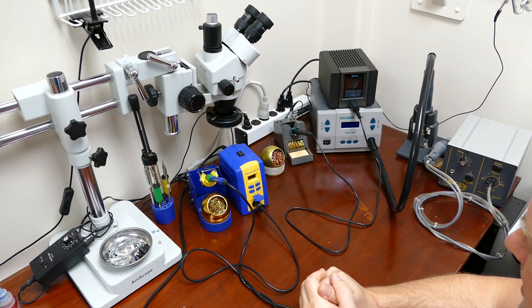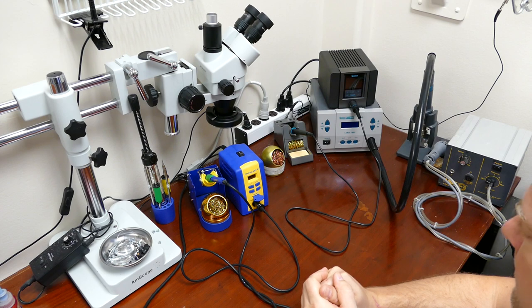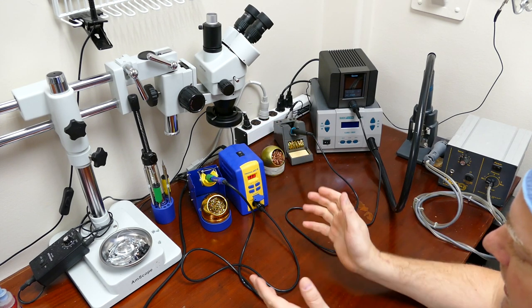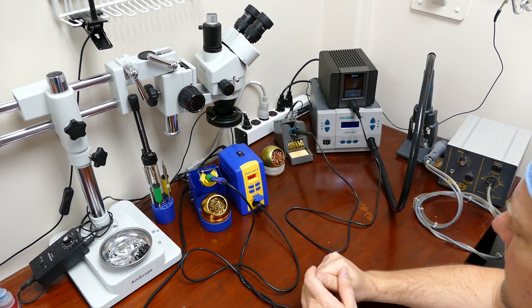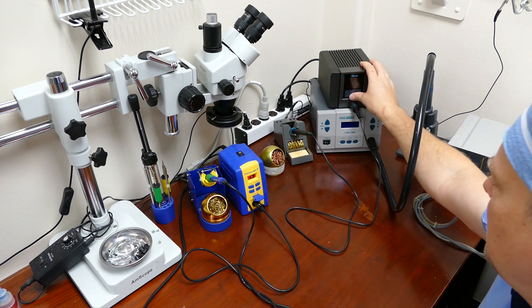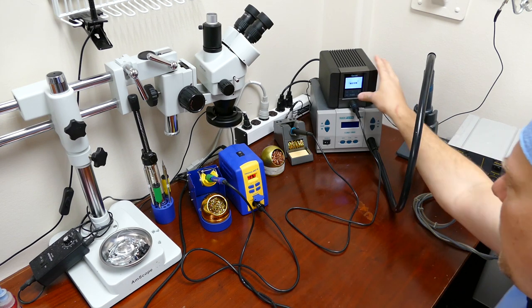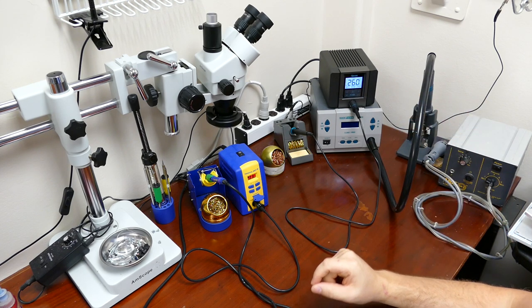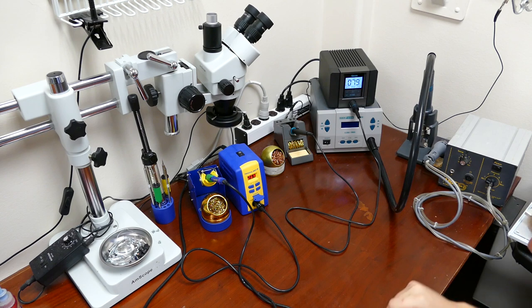The first thing I'd like to cover is how to turn the unit on. I prefer the Hakko method, which is a flip switch, so I can flick it on and go about my work. The Kwik unit, you have to press and hold for a couple seconds, and it will turn on. It goes to a splash screen, and then it starts heating up. You can see it heats up really quickly.